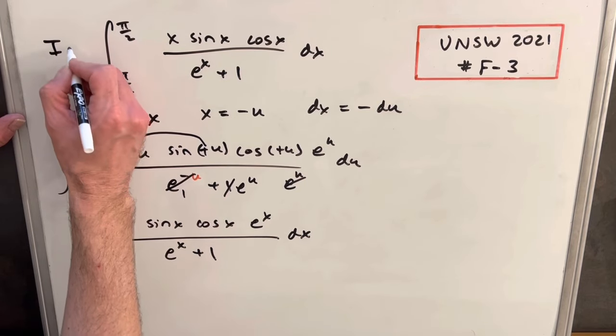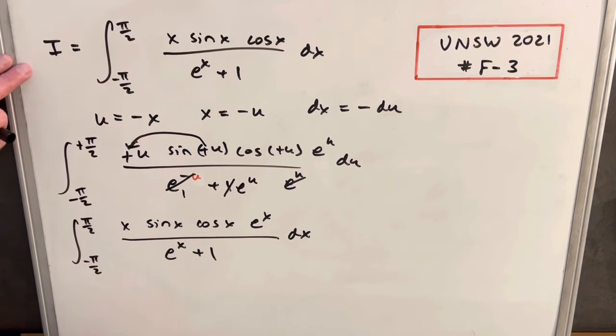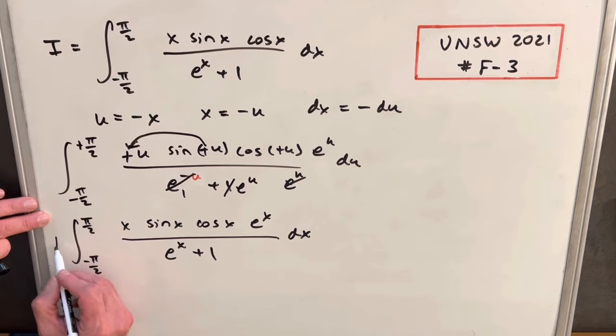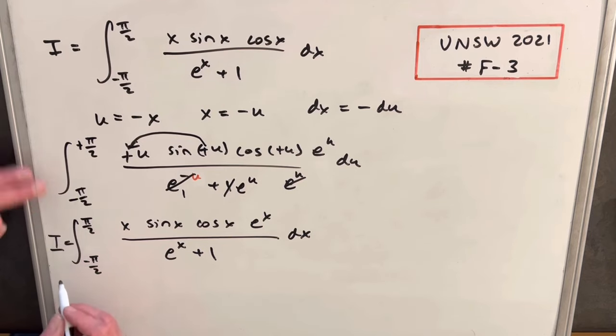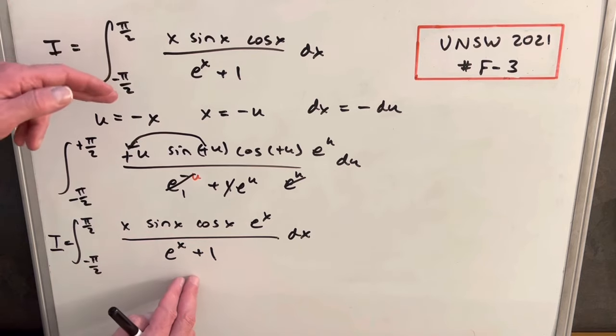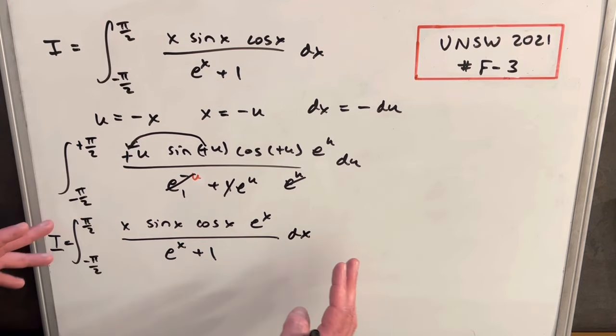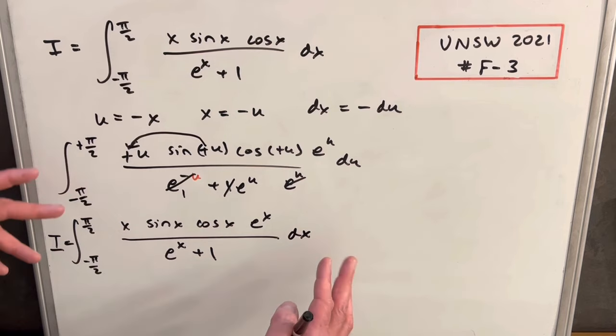Now what I want to do is take these two integrals. Our first integral, we're just going to call this I, just so we can keep track of it. But then this is also I because we didn't do anything to change it, we just manipulated it. Also notice because we have the same bounds, we're all in x, that's going to allow me to bring this into one integral. And we have the same denominator, so we're just going to be able to combine like terms.